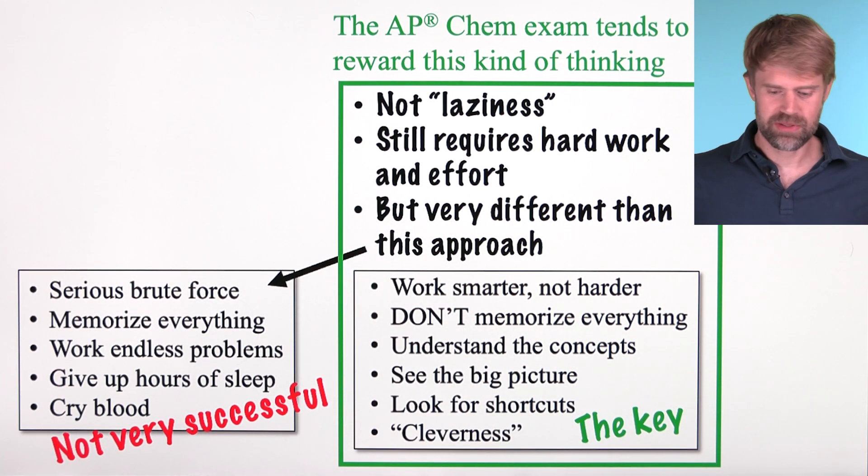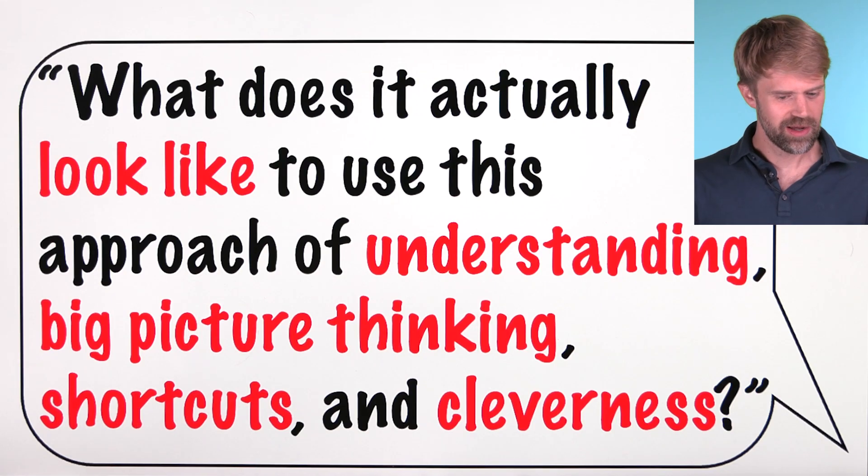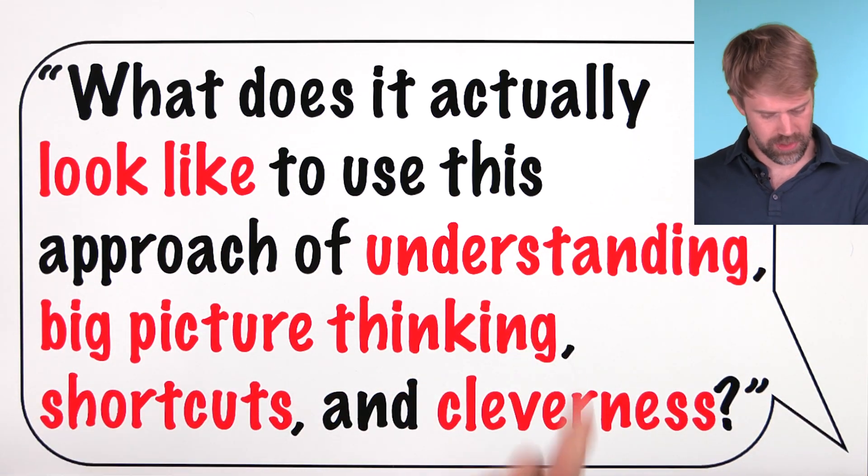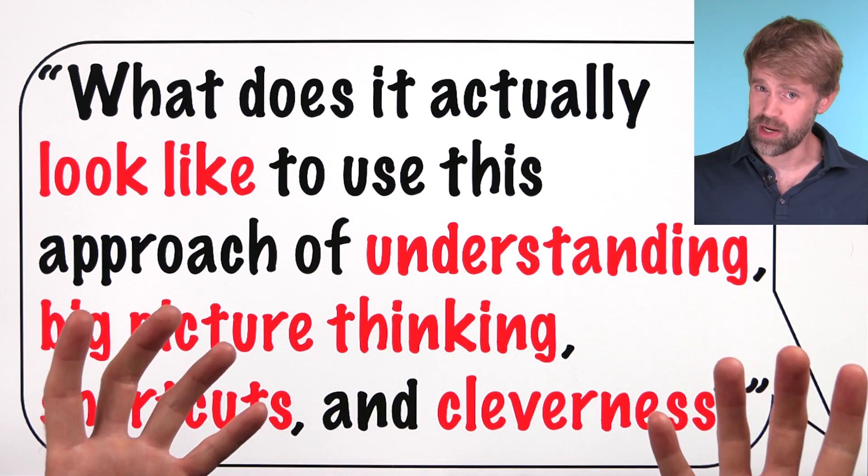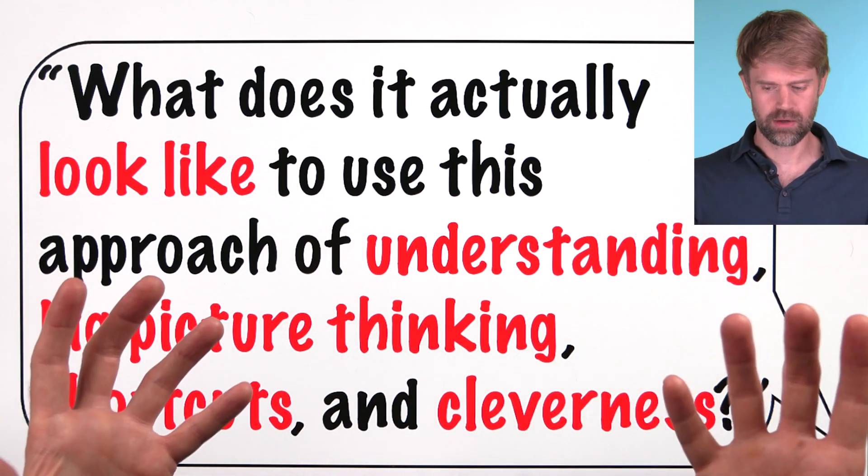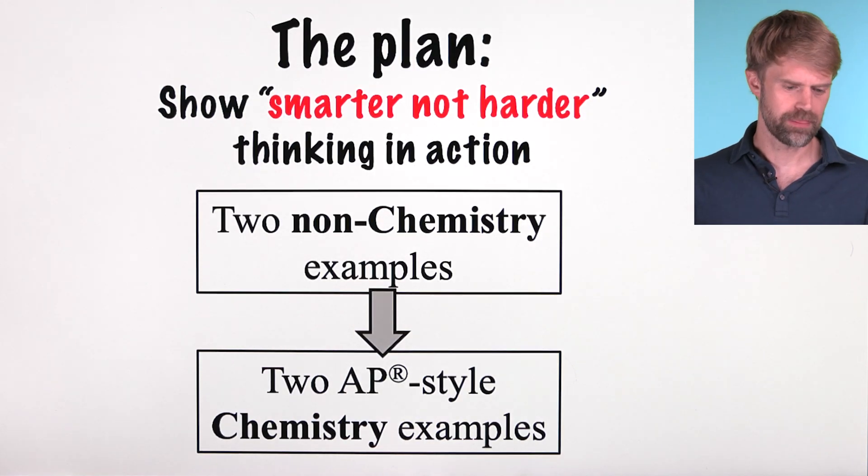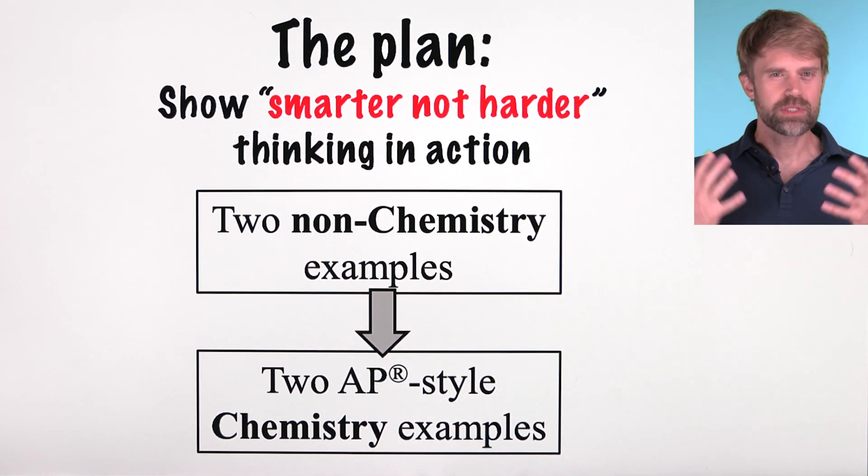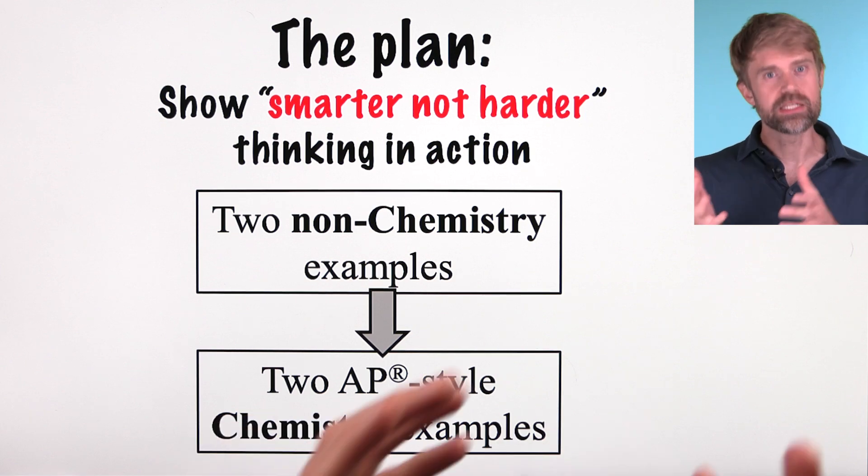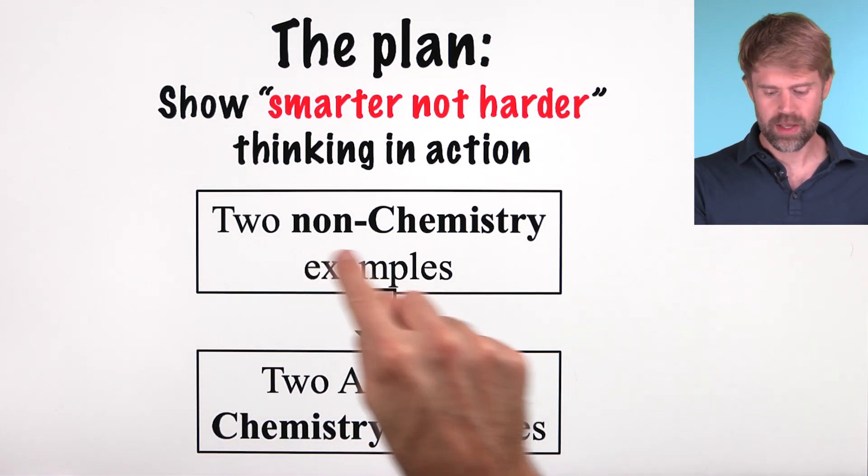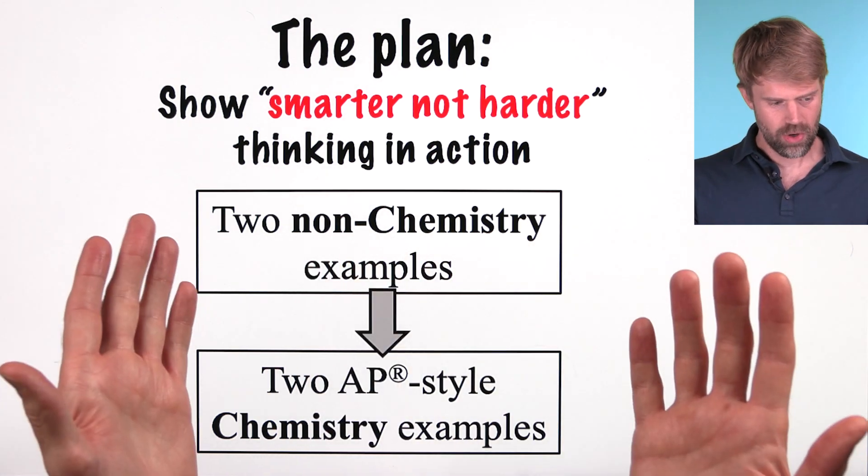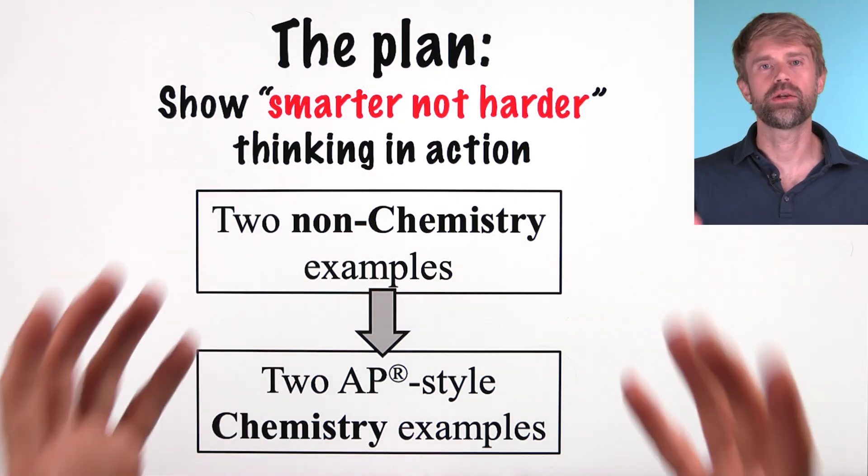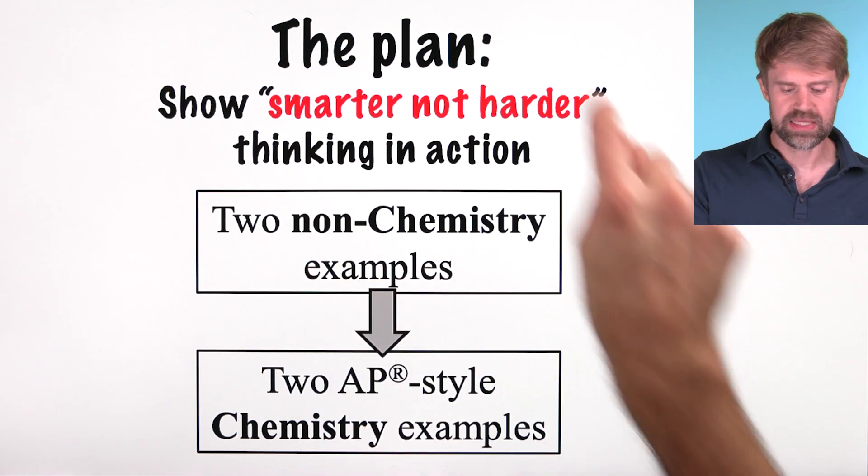So if you're like many students, you might be thinking, okay, thanks for telling me this, but what does it actually look like to use this better approach of understanding, big picture thinking, shortcuts, and cleverness? It sounds great, but I don't really know what it looks like. Well, that's what we're going to see in the rest of this video. We'll look at examples of this smarter, not harder thinking and action. Sometimes it's easier to learn things first from a different point of view. So we're going to start with two quick non-chemistry examples and then we'll work through two AP style chemistry problems to show how we'd approach them if we really understand the concepts at hand and we're trying to use this type of thinking.